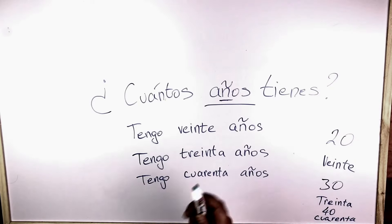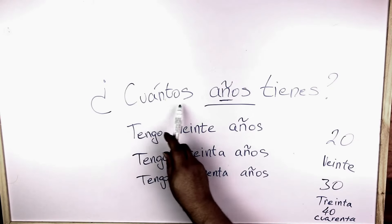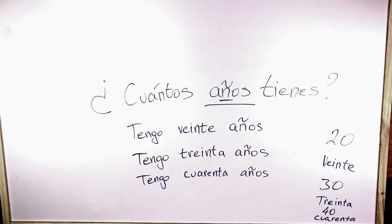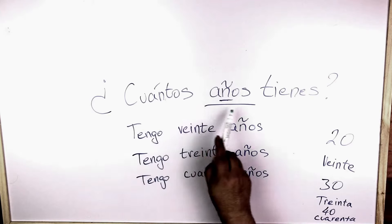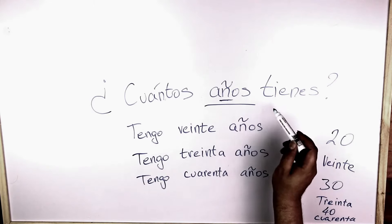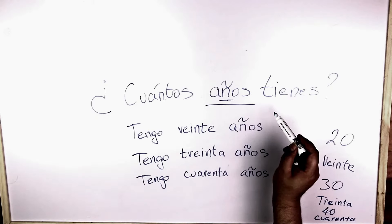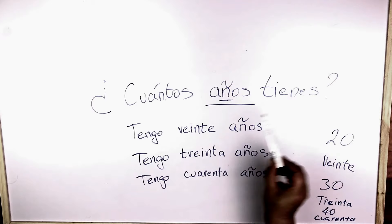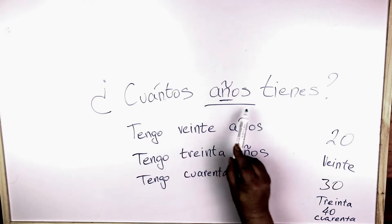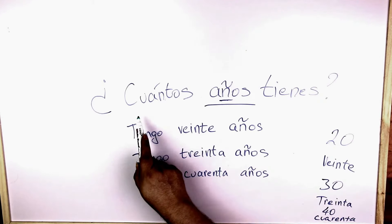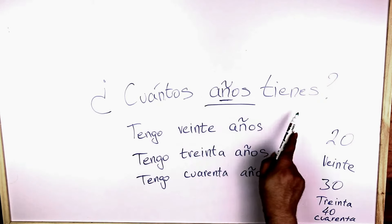Okay, let's revise slowly. ¿Cuántos años tienes? One more time — listen to me carefully. ¿Cuántos años tienes? Notice the T is very soft. It's not tienes, it is tienes. You place your tongue behind your upper teeth. ¿Cuántos años tienes? Repeat after me. ¿Cuántos años tienes?